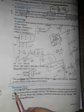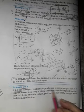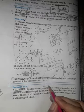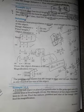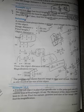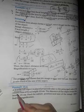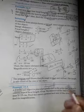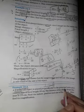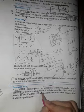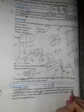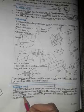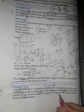Let me read the statement for you: A 2 centimeter tall object is placed perpendicular to the principal axis of a convex lens of focal length 10 cm. The distance of the object from the lens is 15 cm. We will find the nature, position, and size of the image.